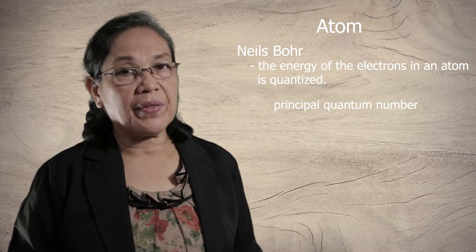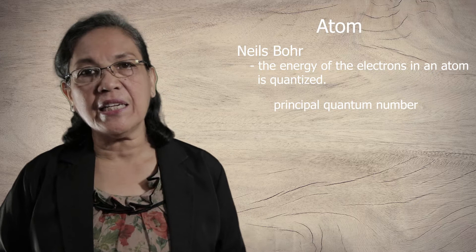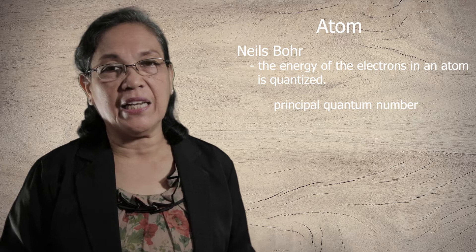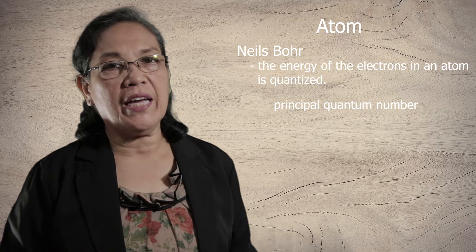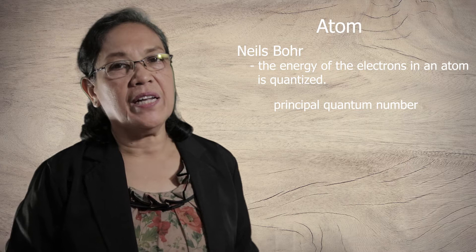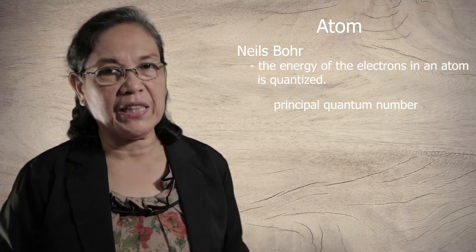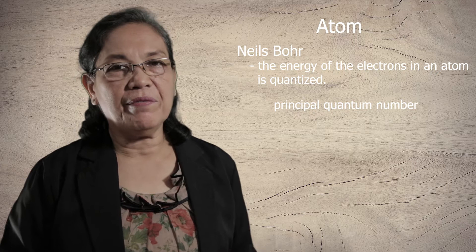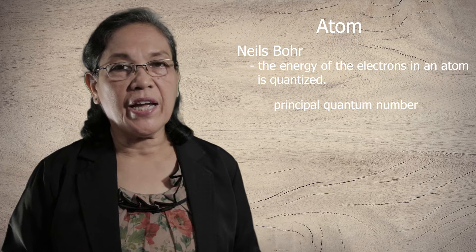Each sublevel has an orbital. In the S sublevel, there is the S orbital. In the P sublevel, we have the Px, Py, and Pz orbitals. In the D sublevel, we have D1, D2, D3, D4, and D5 orbitals. And for the F sublevel, we have orbitals F1, F2, F3, F4, F5, F6, and F7.